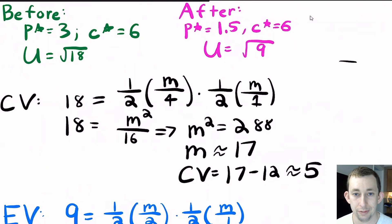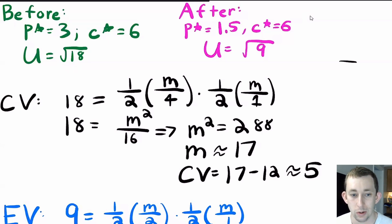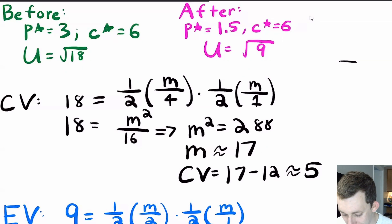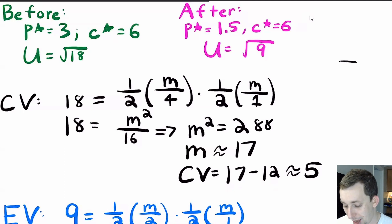The easiest way is to find how much money Bill would need at the new prices to achieve utility √18. Since the utility function has square roots, I can square both sides: 18 = (1/2 × M / 4) × (1/2 × M / 1), using the new prices of Pepsi = $4 and Coke = $1. Solving for M gives roughly 17. The compensating variation is 17 minus the $12 he actually has, which is roughly $5.